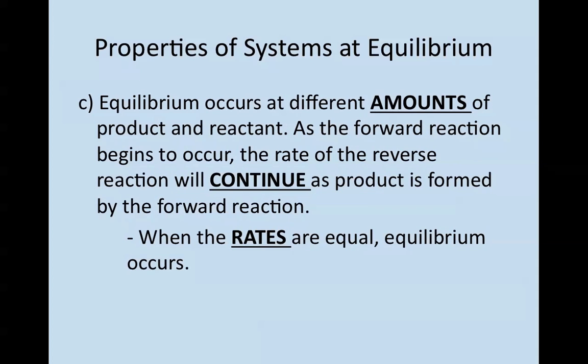Now, equilibrium occurs at different amounts of product and reactant. As the forward reaction begins to occur, the reverse reaction will continue as product is formed by that forward reaction. When rates are equal, equilibrium has occurred. So initially, depending on how much you're starting with, the forward or reverse reaction may be faster than the other. But when equilibrium is achieved, those rates must be equal to each other.